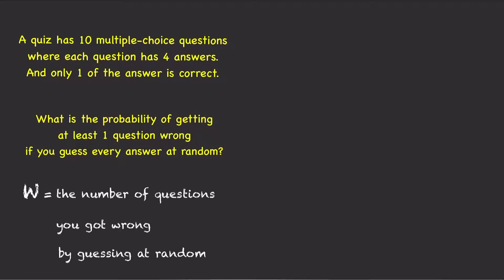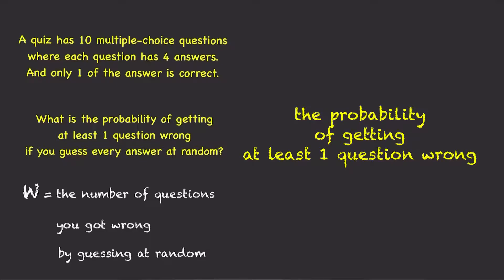If we let w stand for the number of questions you got wrong by guessing at random, then we can write the probability of getting at least one question wrong by guessing every answer at random as p of w is greater than or equal to 1.